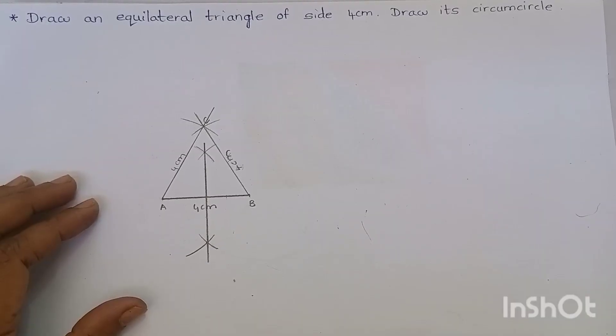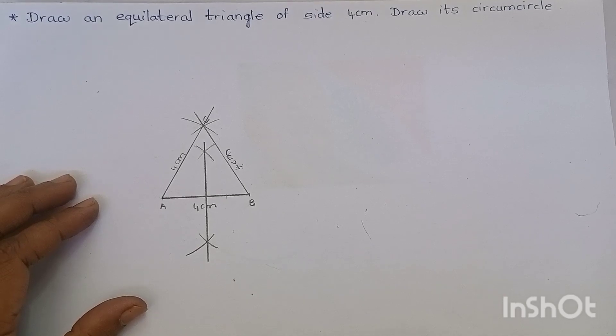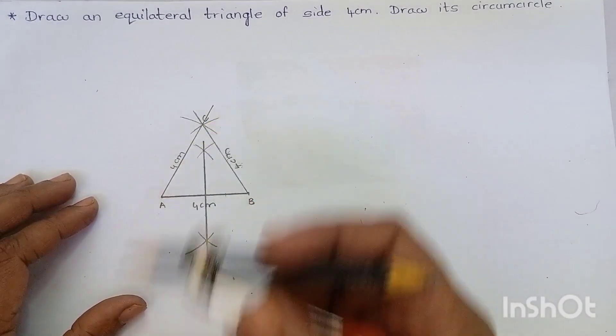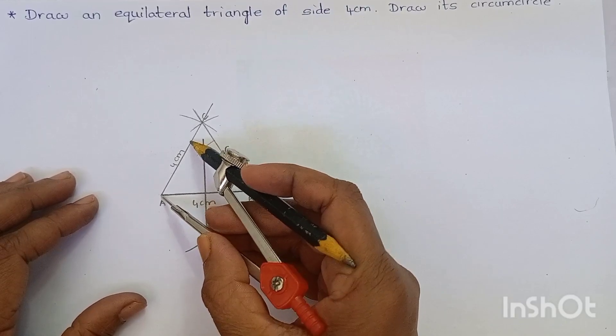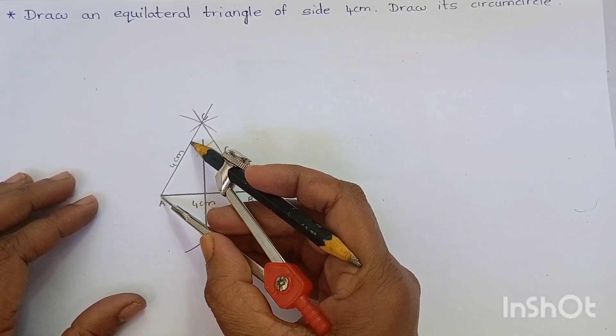Now, let me draw a perpendicular bisector for AC. And we know that to draw the perpendicular bisector, we have to take more than half of AC. Isn't it? It is more than half of AC.